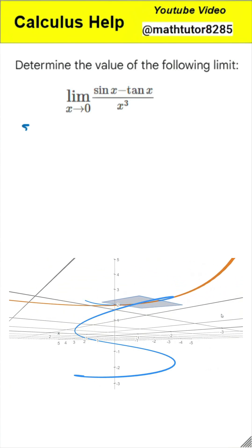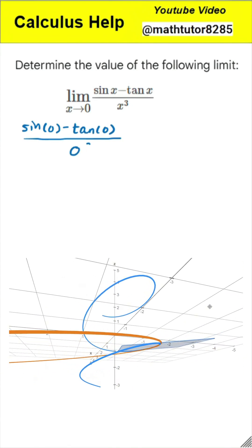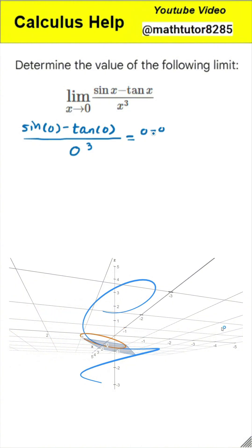First step is to direct substitution and identify the indeterminate form. Let's substitute 0 for x in the expression. The numerator becomes sine of 0 minus tangent of 0, which is 0 minus 0, resulting in 0. The denominator is 0 cubed, which is also 0. This gives us the indeterminate form of 0 divided by 0, which tells us we need to use a special method to find the answer.